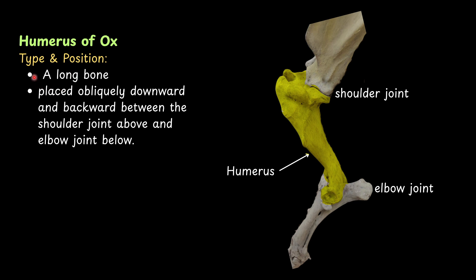Humerus of ox. Type: it is a long bone. Position: it is placed obliquely downward and backward between the shoulder joint above and elbow joint below.